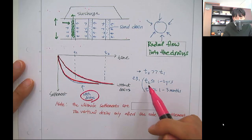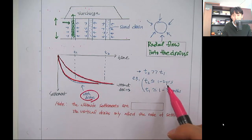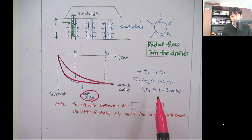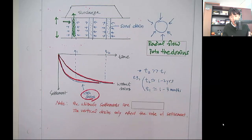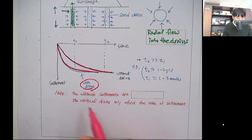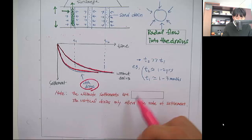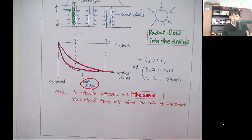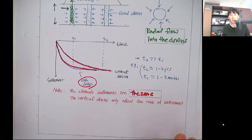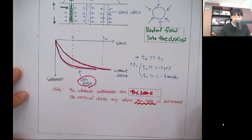Without drains, settlement may take one to two years. With drains, consolidation can occur within about three months — that's the goal of installing vertical drains. It should be noted that the ultimate settlements are the same. Vertical drains do not prevent or increase settlement; they only affect the rate of settlement.